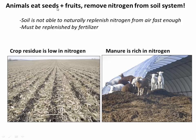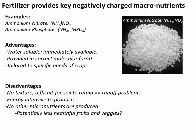Animals like us eat those seeds and fruits, removing the nitrogen from the soil cycle. After a field has been harvested, all that's left behind is a bunch of cellulose with no nitrogen — the nitrogen went into an animal's digestive system and came out as manure. So a lot of the nitrogen ends up in the manure. The soil cannot replenish that nitrogen because it can't make it from air fast enough — it needs to recycle it. This is where fertilizer comes in.